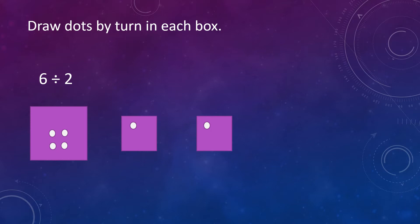We have to put the dots equally in each box. Now we are left with four dots to divide. Again, put a dot in each box — take one dot and put it in the first box, then take another dot and put it in the second box. Now put the last two dots, one in the first box and the last dot in the second box. There are zero dots left — all the dots have been divided.